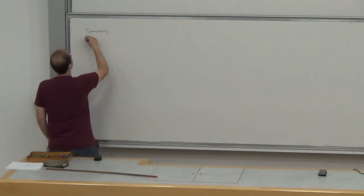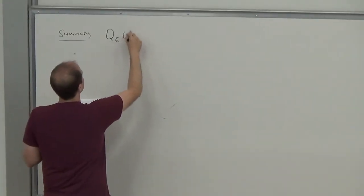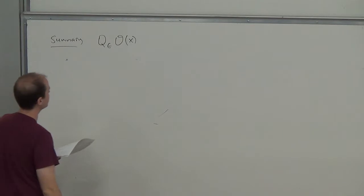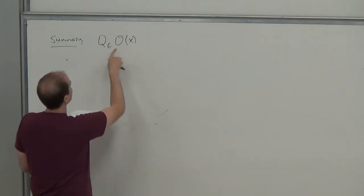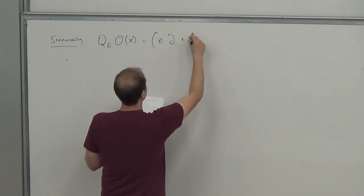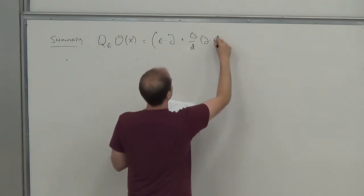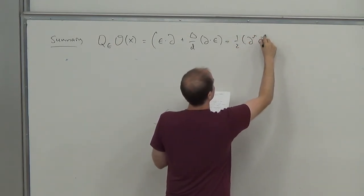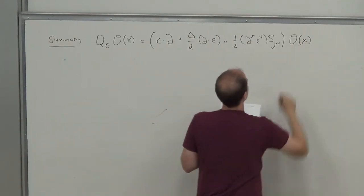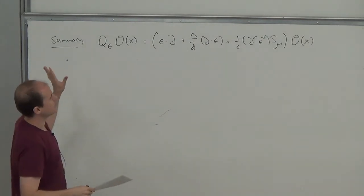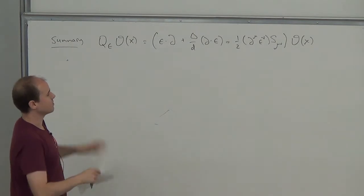As a summary: using the conformal algebra, one can derive how all topological surface operators act on a local operator, under the assumption that O(0) is primary. You can show as an exercise that the various formulas we've derived can be written compactly in terms of the conformal killing vector associated to each charge. This just follows from the conformal algebra — we didn't pull this out of a hat.